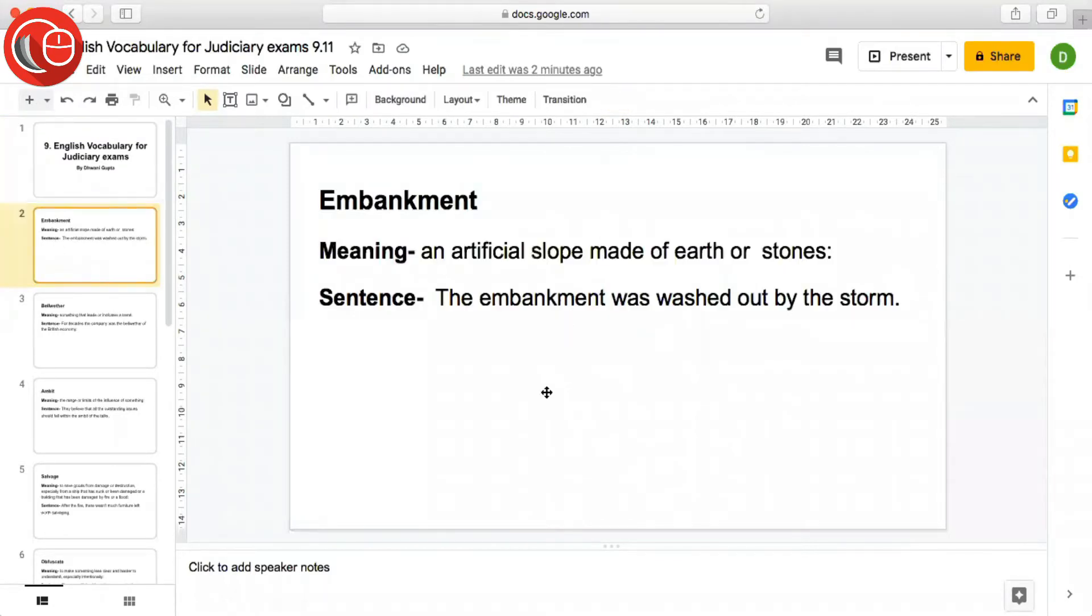The first word for the day is embankment. It is a very common word which we have often heard in geography. Meaning is an artificial slope made of earth or stones. So embankment is an artificial slope which is slightly raised made of earth or stones so as to prevent water from flooding. Sentence: The embankment was washed out by the storm. So when storm came the embankment was completely washed away.